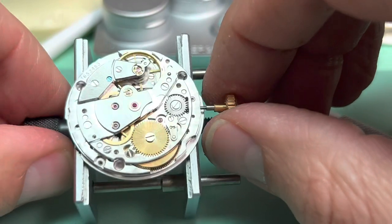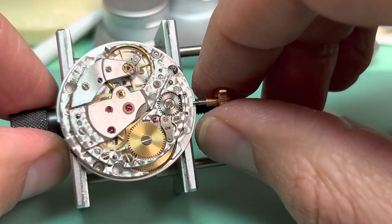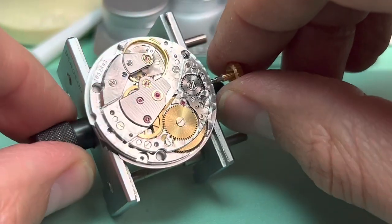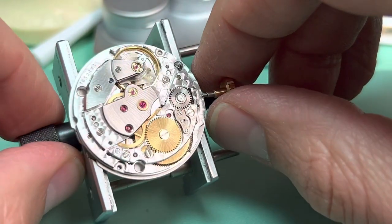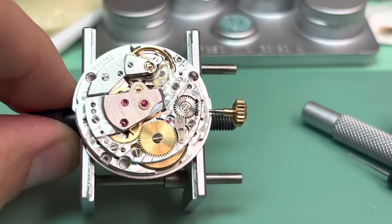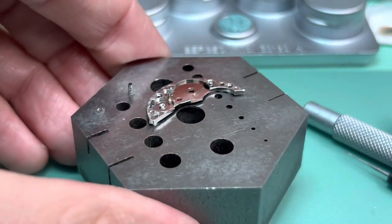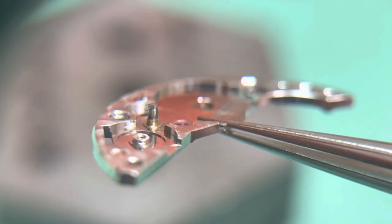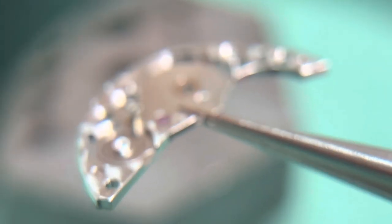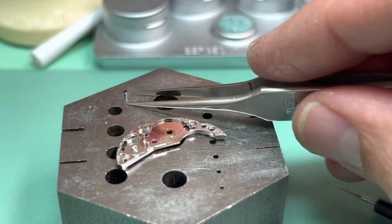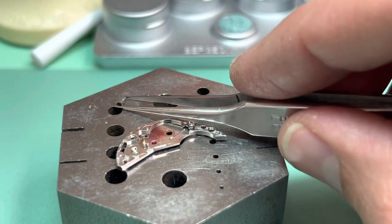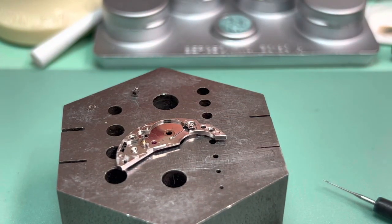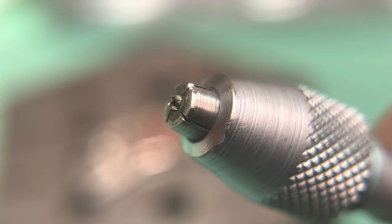So it's a good idea to always service your watch. This 3000 caliber, the 31 calibers don't have this problem. The 1500 calibers don't have this problem, but the 3000 series does have this problem. So that's why we're here today doing this.